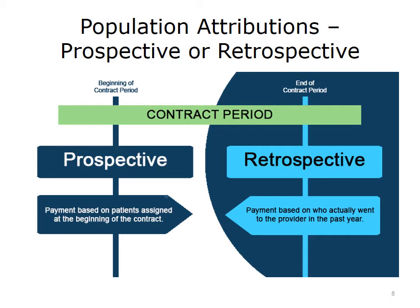Under prospective patient population assignment, patients are assigned to the provider based on past encounters or past care patterns — people who went to a particular physician in the past are assigned to that physician for the period of the ACO contract going forward. This is the most common method. The prospective method allows ACOs to inform patients that they are part of the ACO, and because patients are assigned at the beginning of the contract, the provider can more easily track patients and focus on quality metrics. However, a key concern is that patients don't necessarily return to the same physician just because they did so in the past.